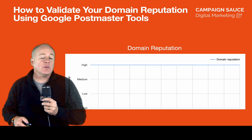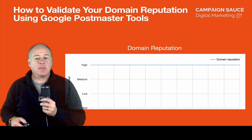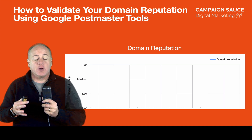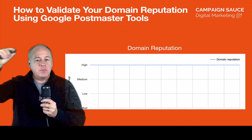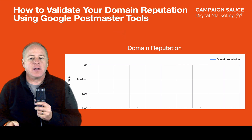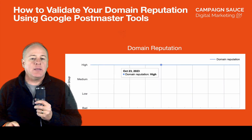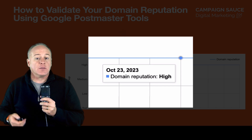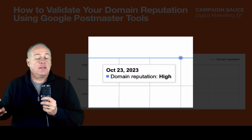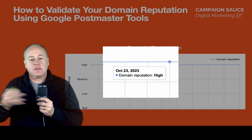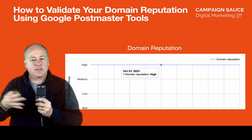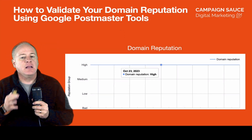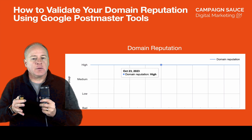There's another report called domain reputation, and this one's pretty important. With domain reputation, if you look at the top you're going to see a really thin blue line going across where it says 'high.' If you zoom in on that, this was high for us — that's good. It's a blue line, it's consistent, it's solid. This is a really big deal. We want to make sure we have a high reputation rate inside of Google.